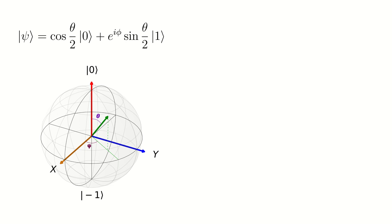We have a qubit state vector written in the most general form. Here theta and phi are the coordinates on the Bloch sphere.